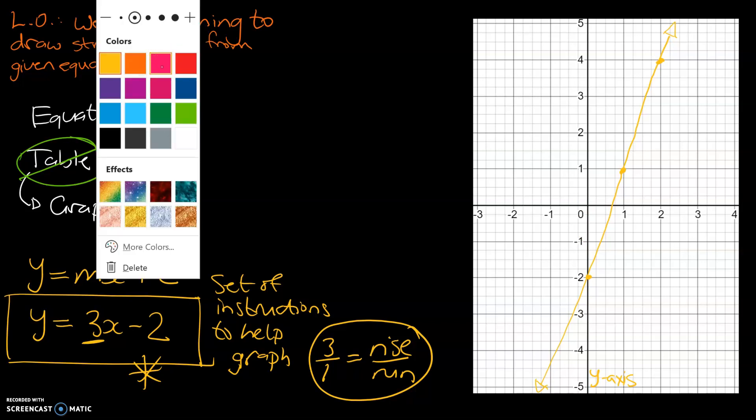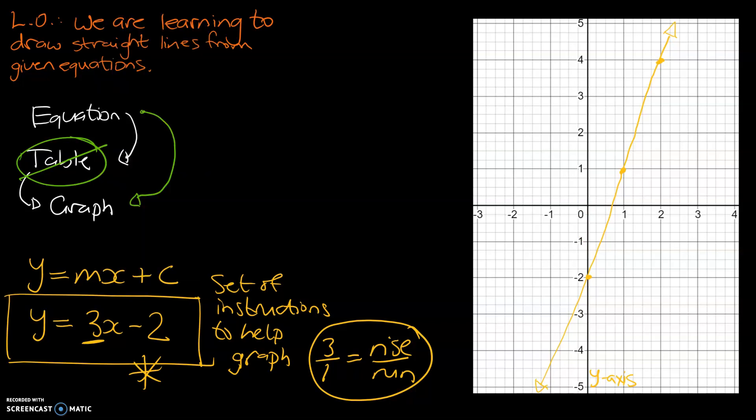So, let's have a go at another example. Let's say we're using the equation y is equal to negative 2x plus 1. So, the first starting point is the plus 1. That tells us where to start on the y-axis. So, we're going to be starting at positive 1.